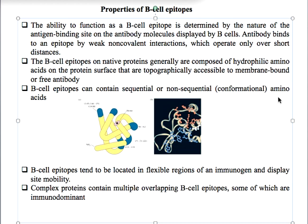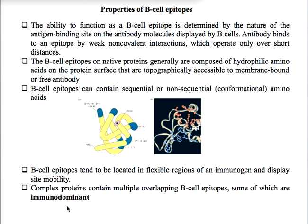B-cell epitopes can be of two types: sequential and non-sequential or conformational. In a sequential epitope, the amino acids making up the epitope are present as contiguous amino acids in the primary structure of the protein. In a non-sequential or conformational epitope, the amino acids are not contiguous in the primary structure but are brought together in close proximity in the three-dimensional structure. B-cell epitopes must be located in flexible regions of an immunogen so they can show some mobility to interact with the immunoglobulin molecule.